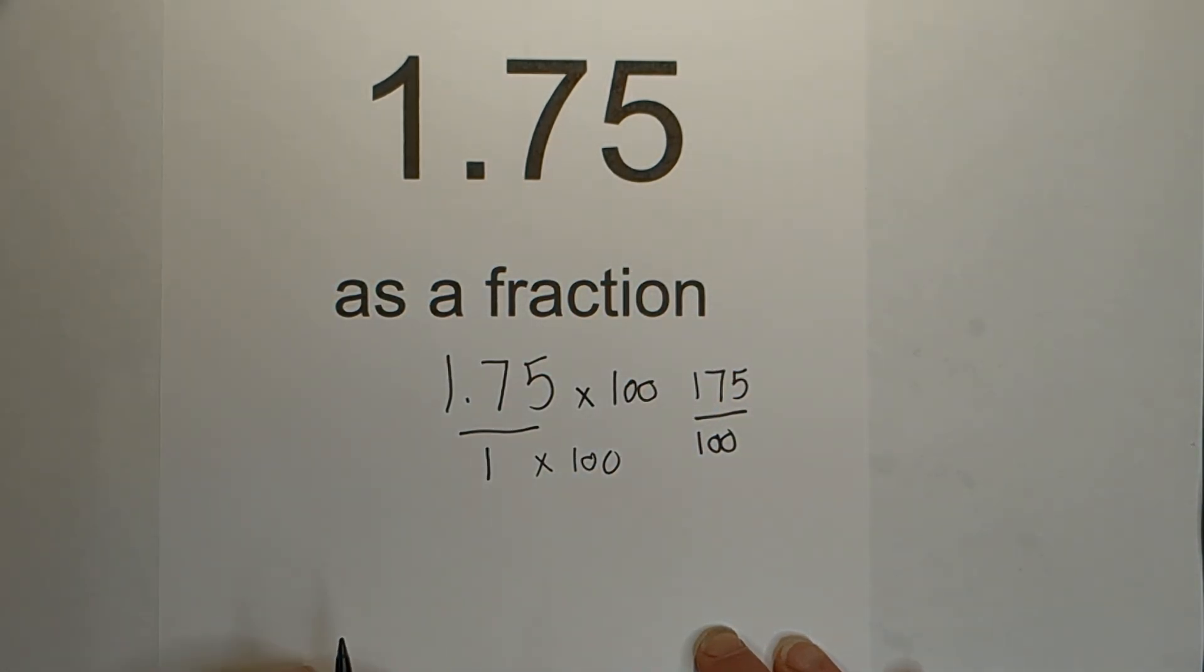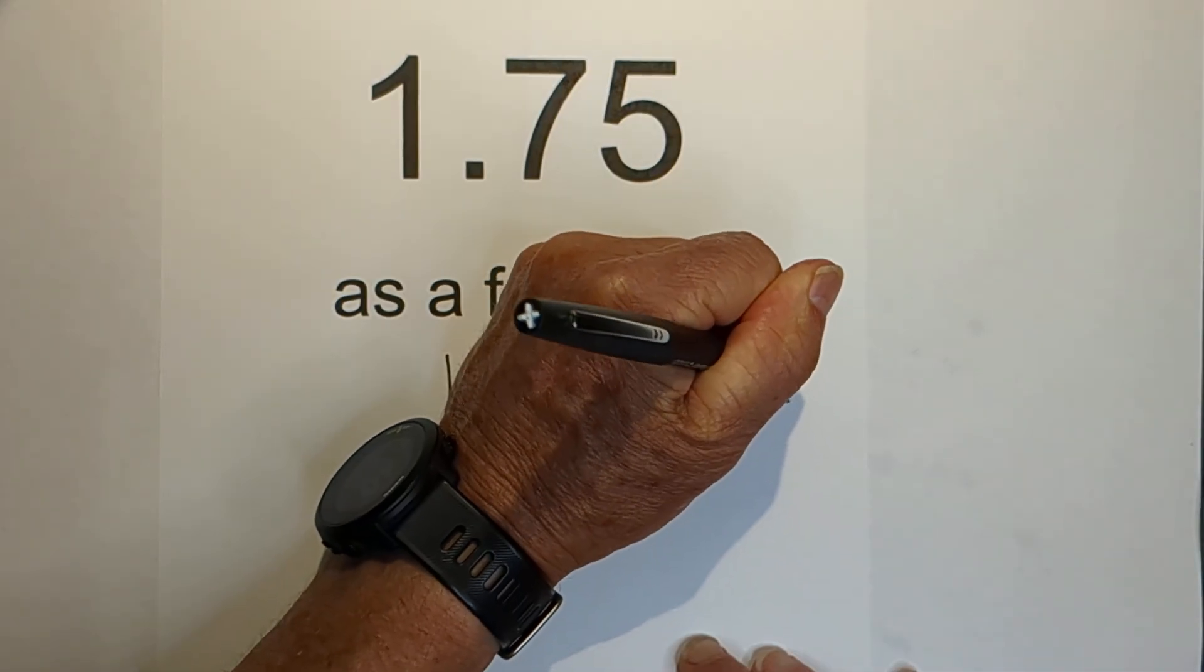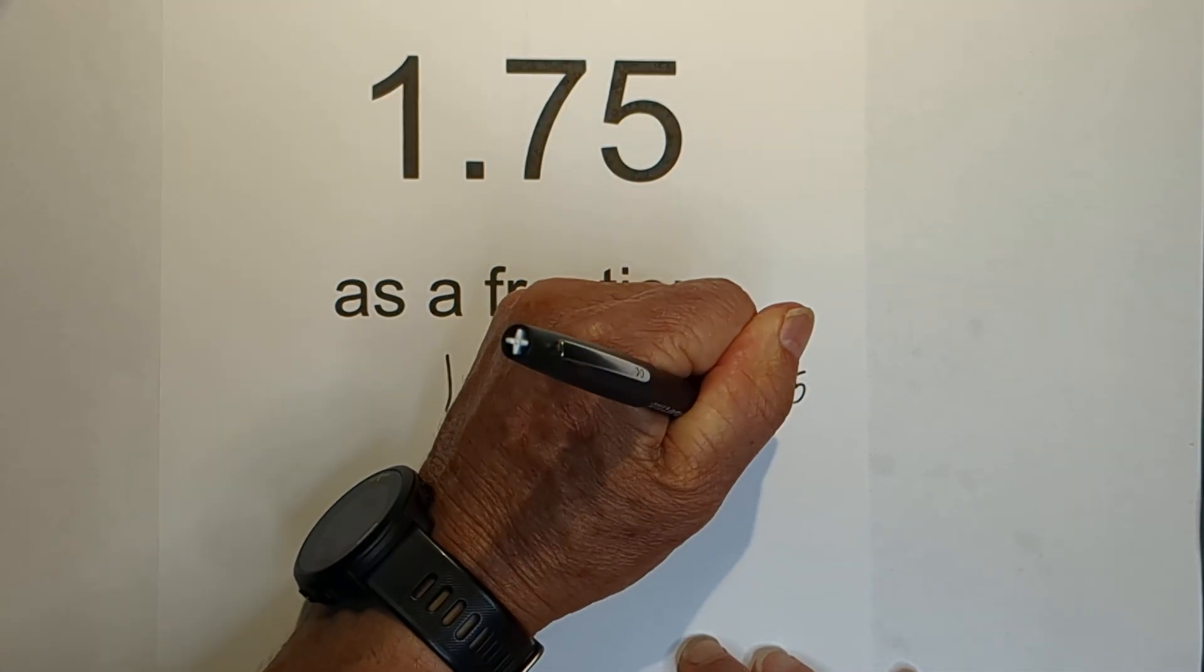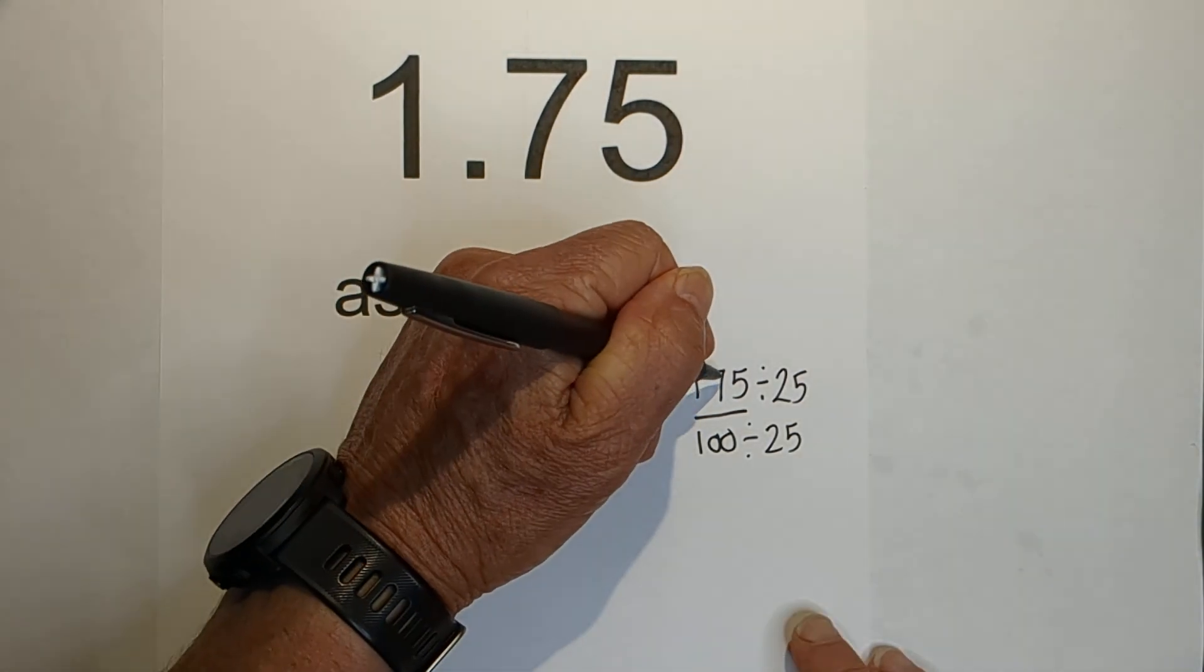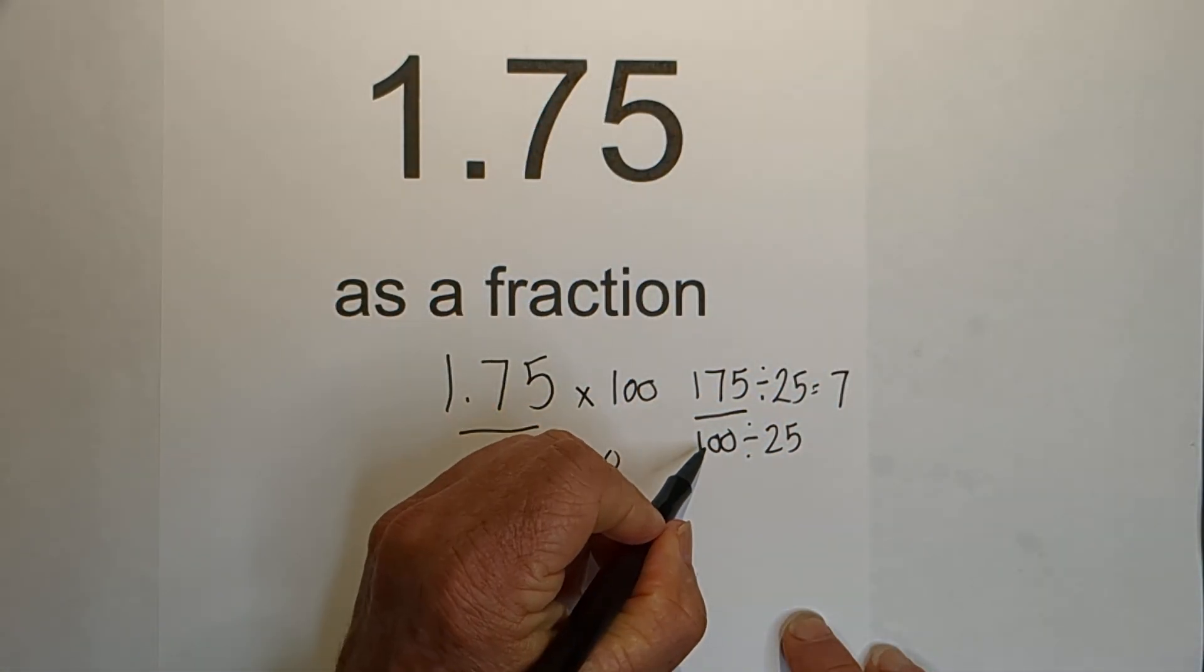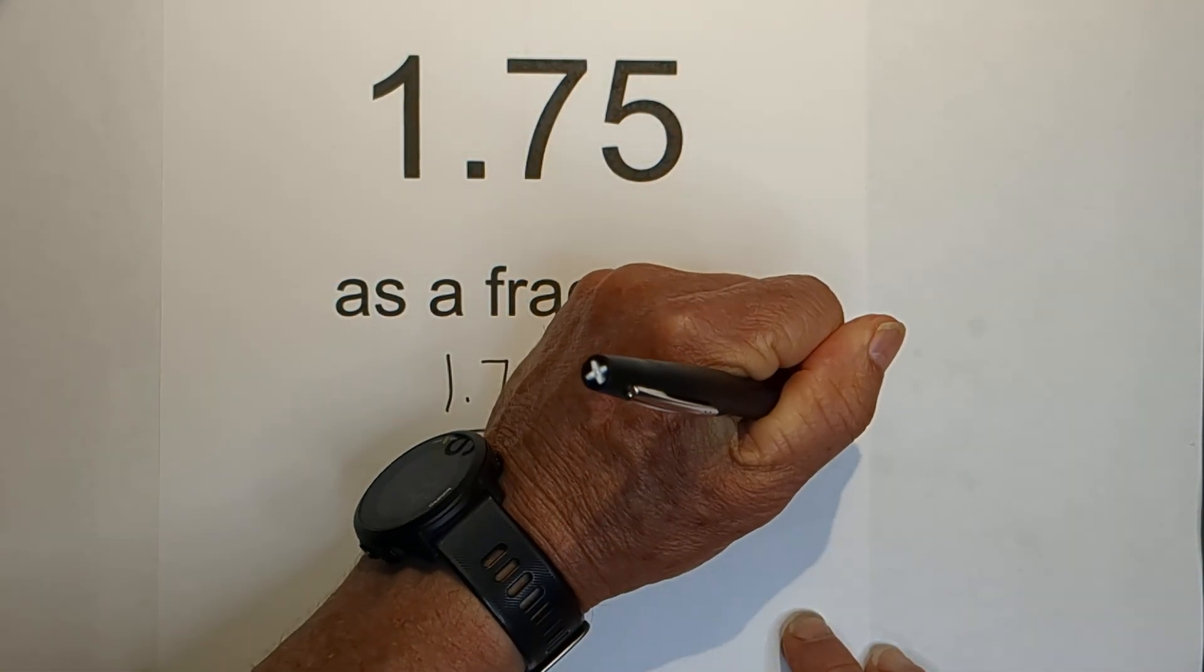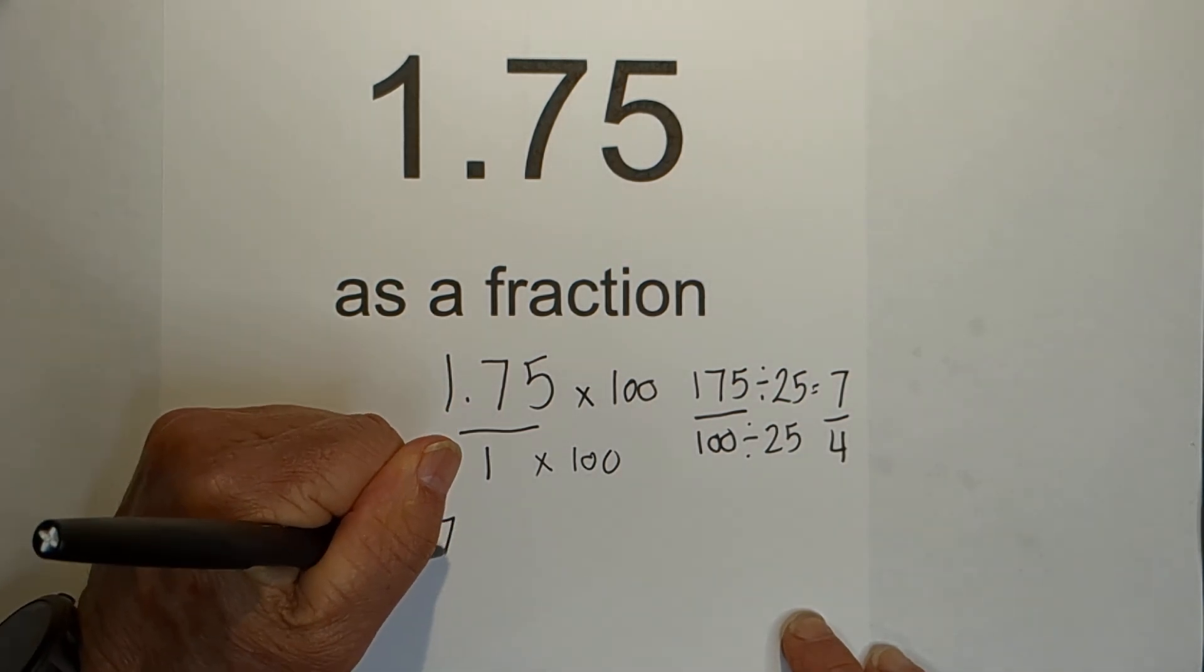Now what we can do is simplify. Let's go ahead and divide both by 25 because I know they're both divisible by 25. 25 goes into 175 seven times, and 100 divided by 25 is 4. I know that 7 is prime.